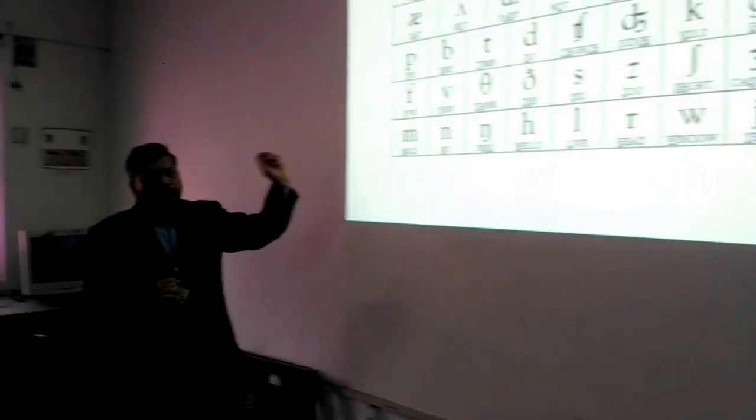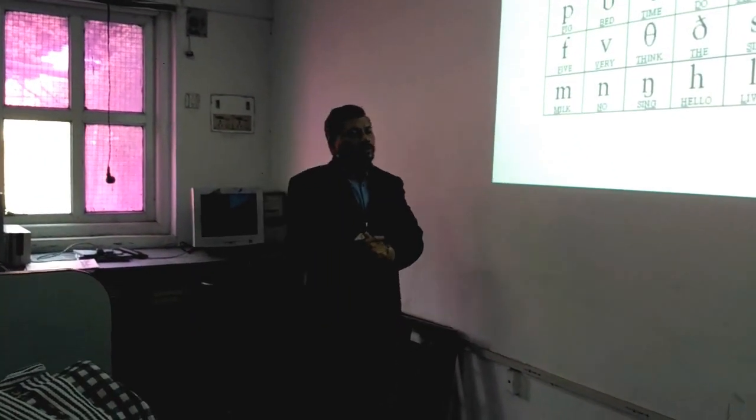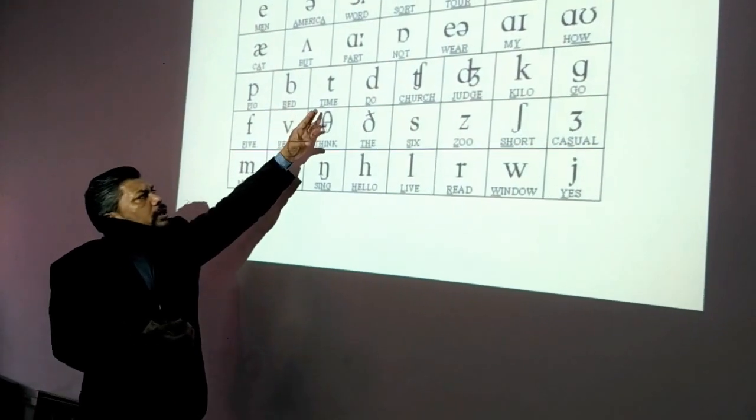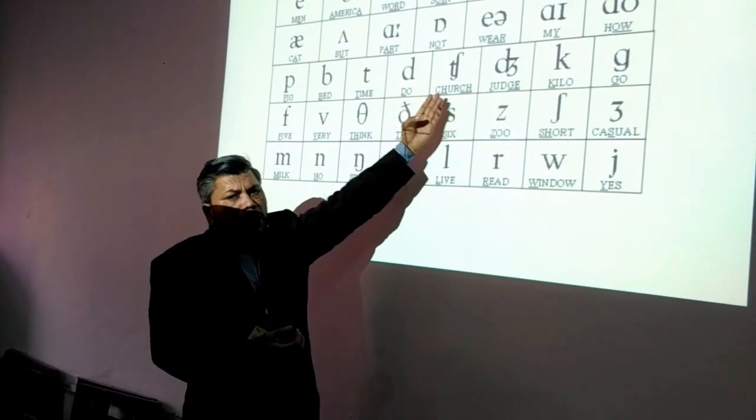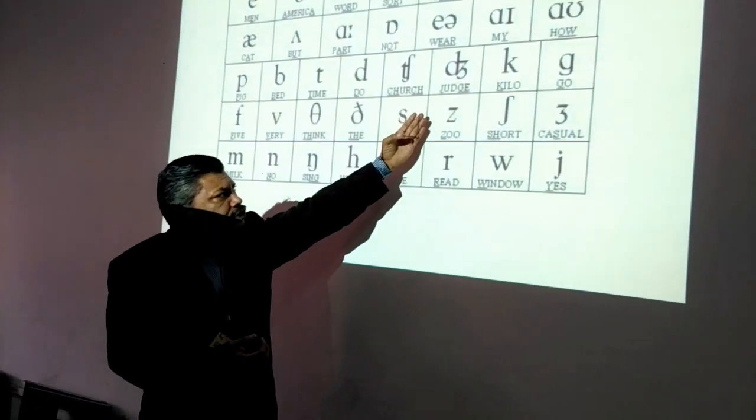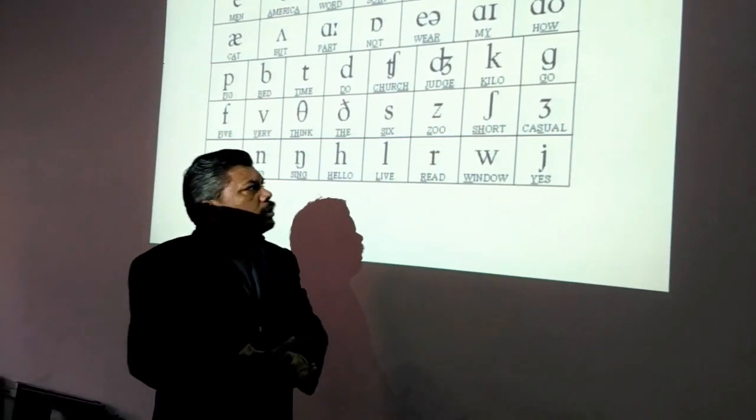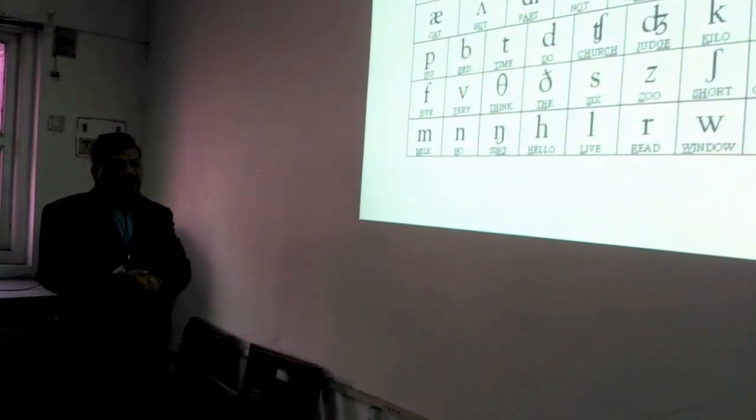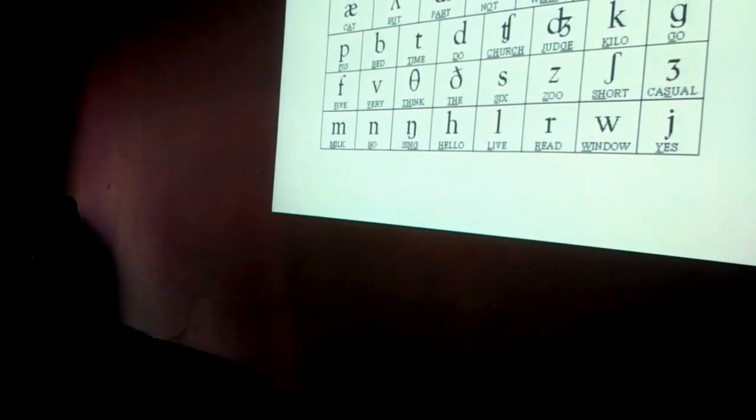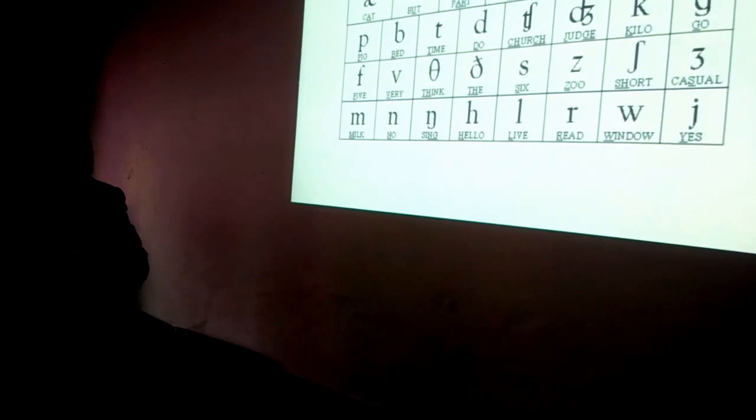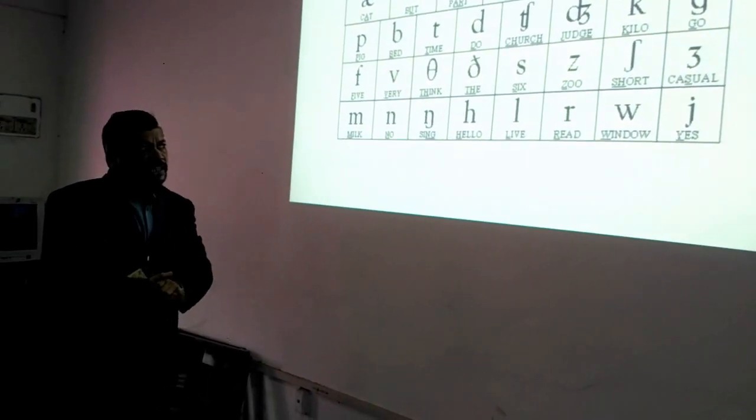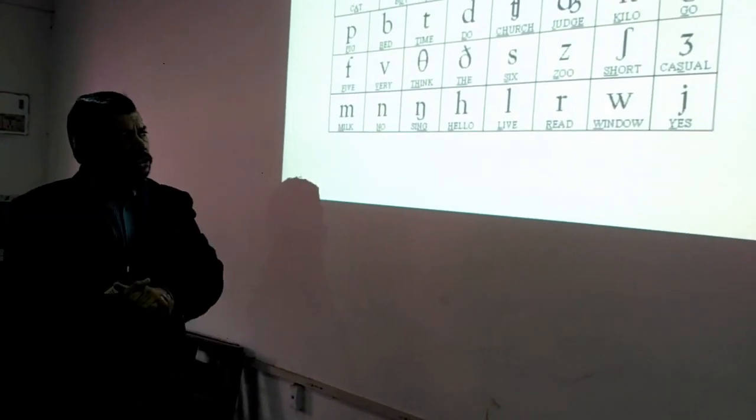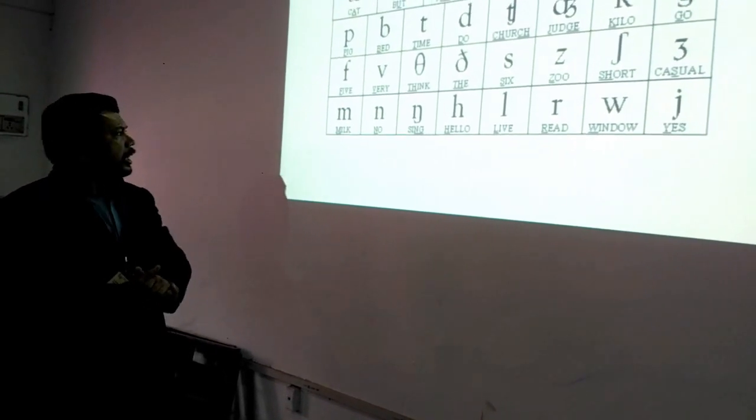Let us have a practice with these consonant sounds again. P in big, B in bet, T in tight, D in do, CH in charge, J in judge, K in kill, G in go. Then there comes F in five, V in very. And then TH in think, DH in this, S in six, Z in zoo. SH in short, ZH in casual.